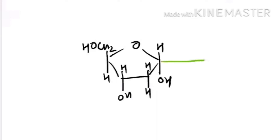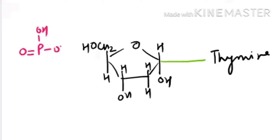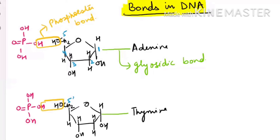Now see another nucleotide — again a glycosidic bond with another nitrogenous base. This is your ester bond at the fifth carbon. Now here we are going to make the diester bond formation. This bond is called the phosphodiester bond.